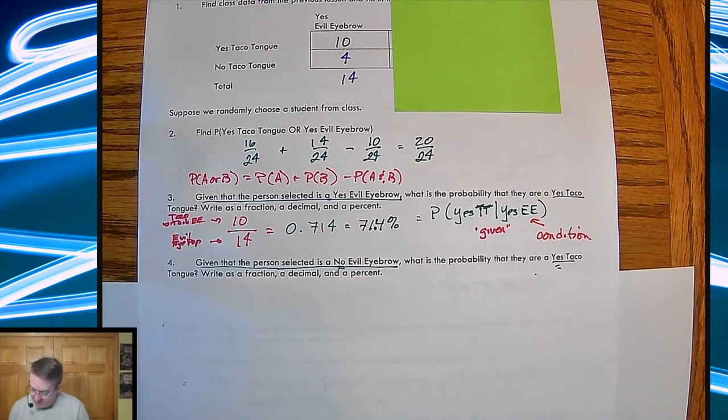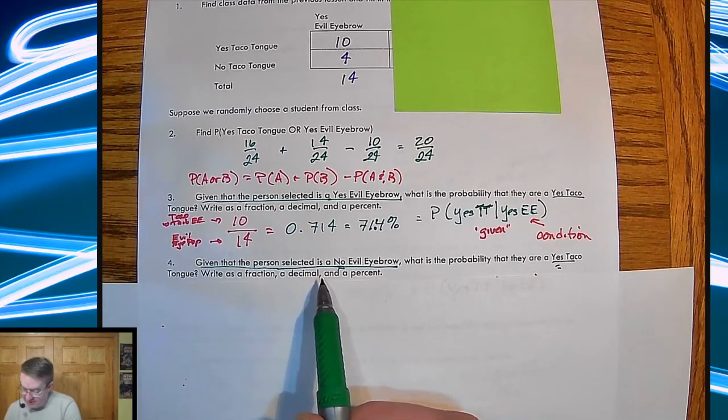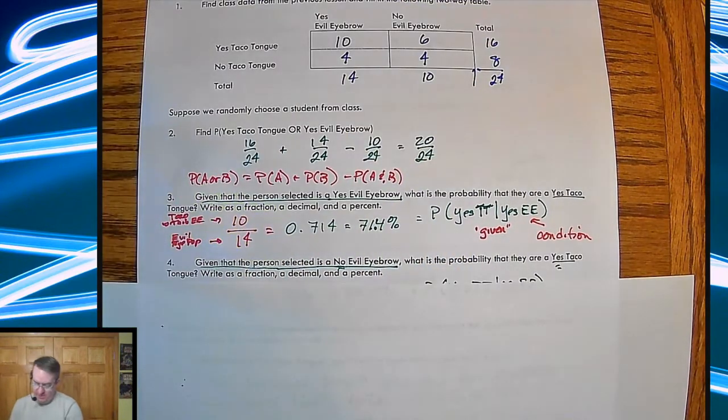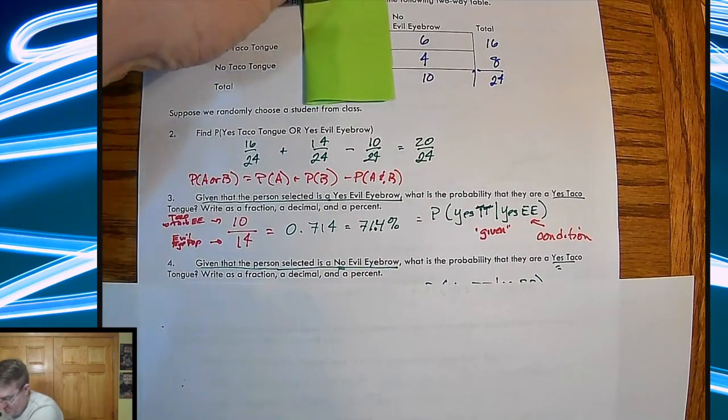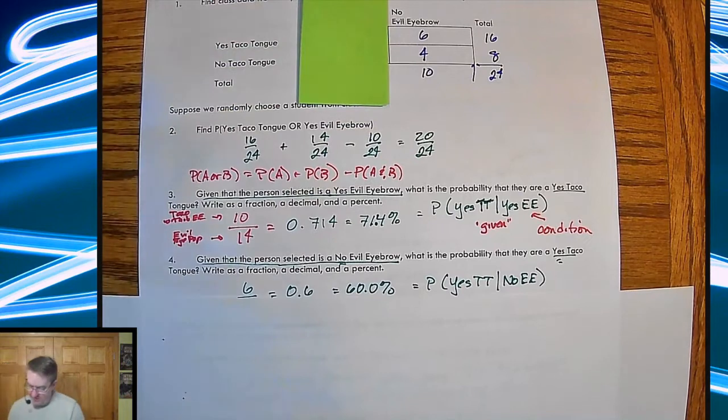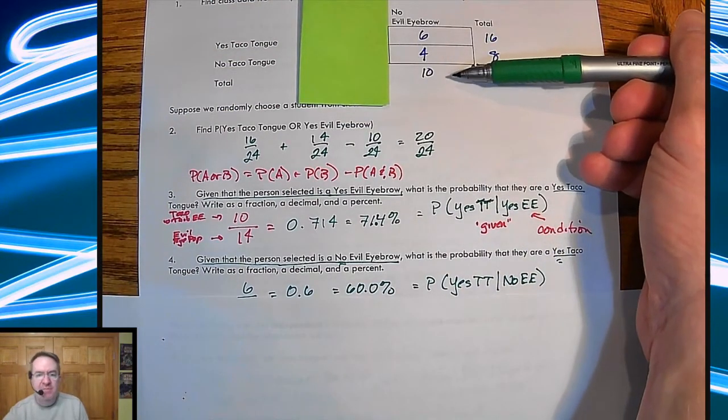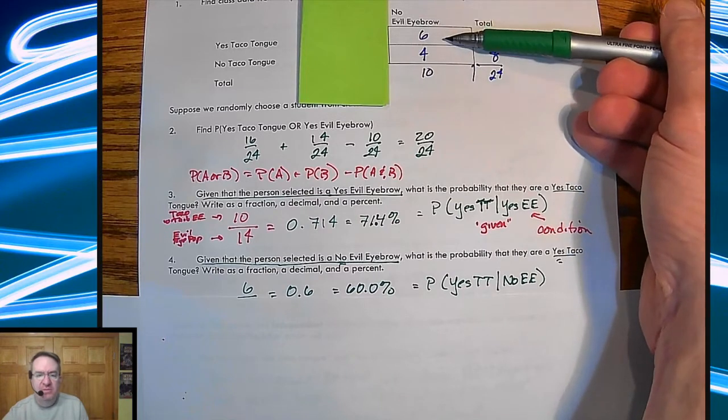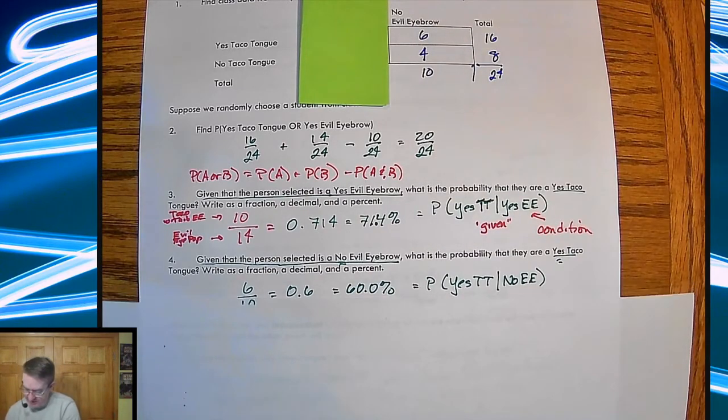So now the question, let's reverse it, or let's go for the complement. Given that the person selected is no evil eyebrow, so that means we're now over here. What's the probability that they are a yes, taco tongue person? So notice here, we have 10 people who can't do evil eyebrow. Six of them can taco tongue. So that's where I got these numbers here.